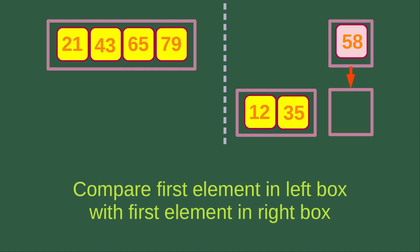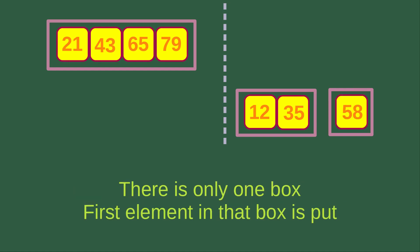Now we compare the first element in the left box, which is 58, with the first element in the right box. Here we actually don't have a right box. Since there is only one box, we have nothing to compare, so we just put 58 into the merging box. Now the merging box has only one element.